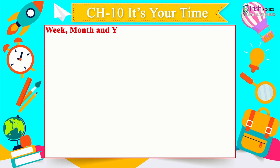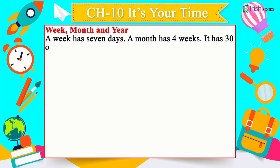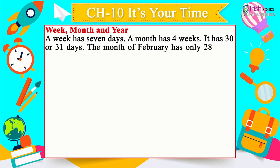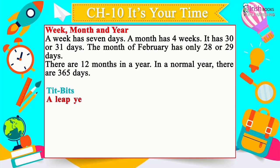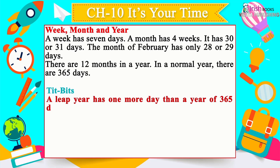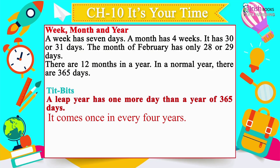Week, Month and Year: A week has 7 days; a month has 4 weeks and 30 or 31 days. February has only 28 or 29 days. There are 12 months in a year; in a normal year there are 365 days. A leap year has one more day and comes once every 4 years.